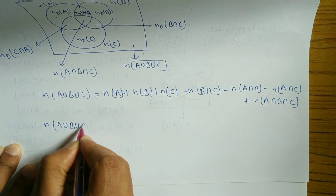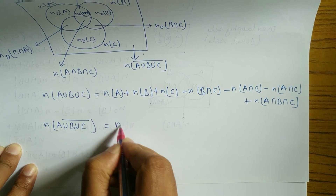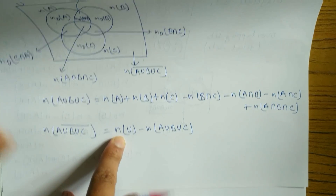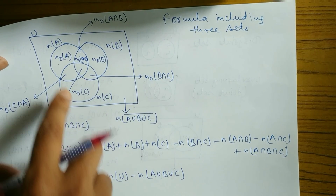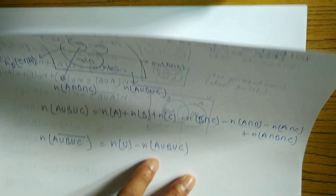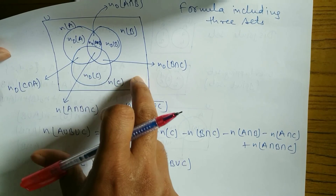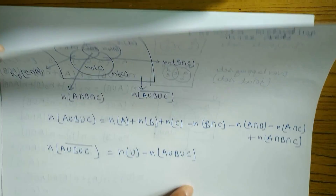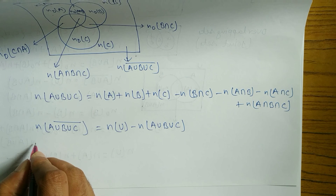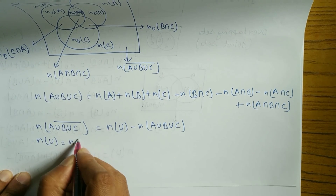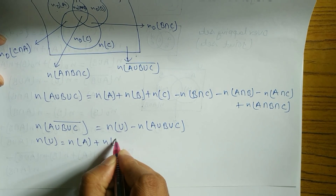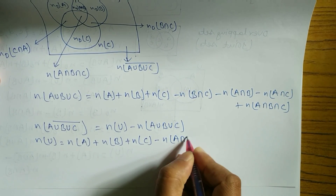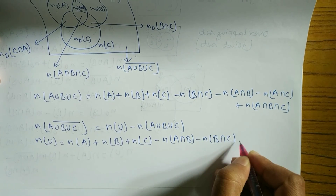The formula for n(A∪B∪C) complement = n(U) − n(A∪B∪C). From the total n(U), if you subtract n(A∪B∪C) you get the outer part — the elements outside all three sets. Also: n(U) = n(A) + n(B) + n(C) − n(A∩B) − n(B∩C) − n(A∩C) + n(A∩B∩C) + n(A∪B∪C) complement.